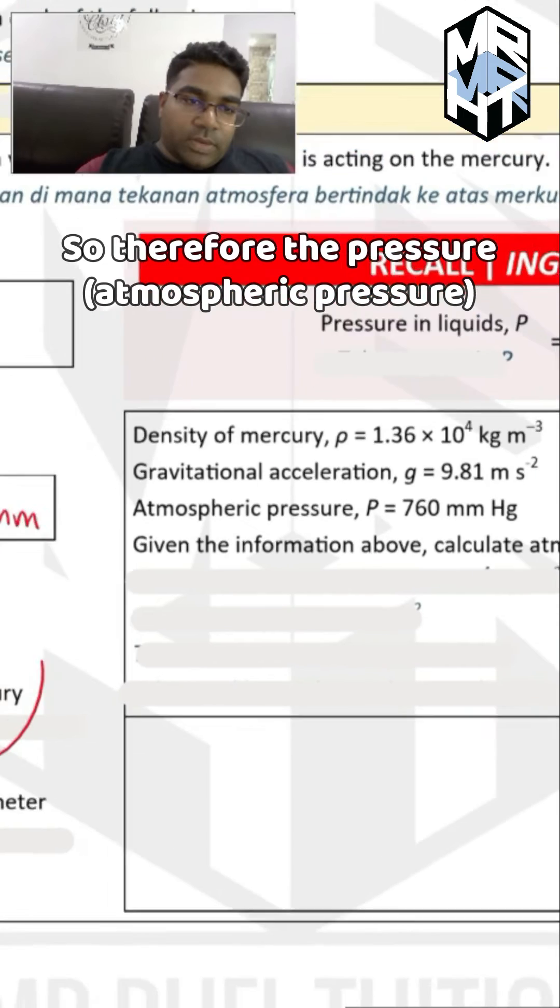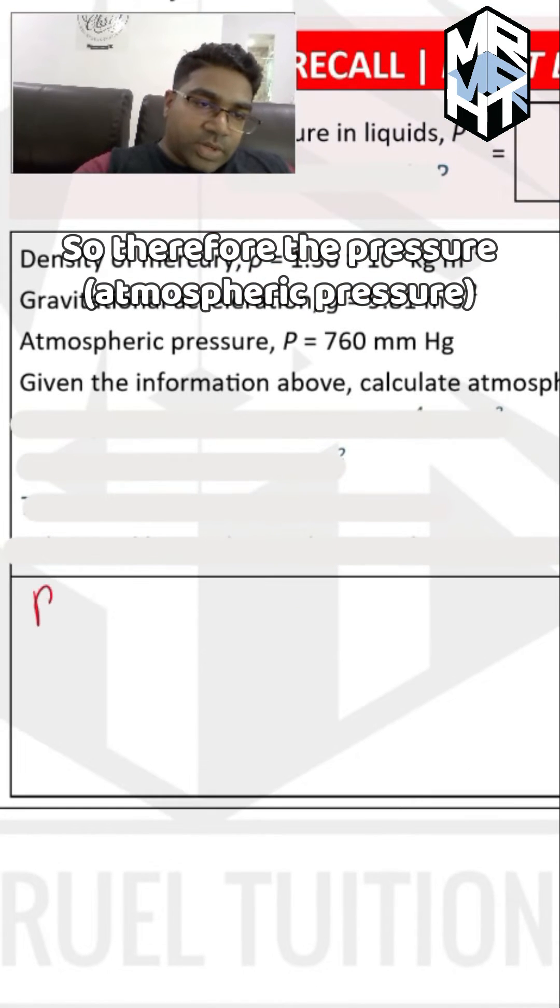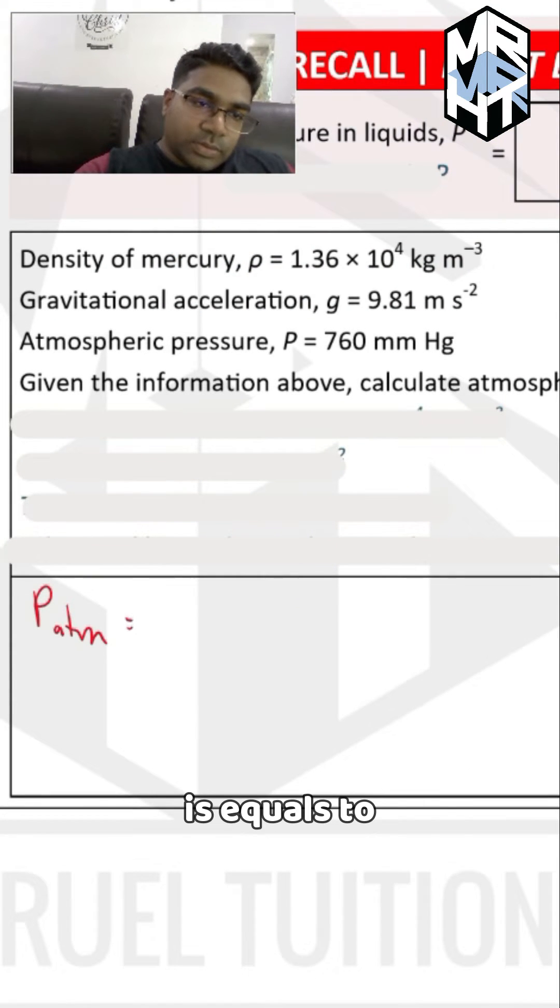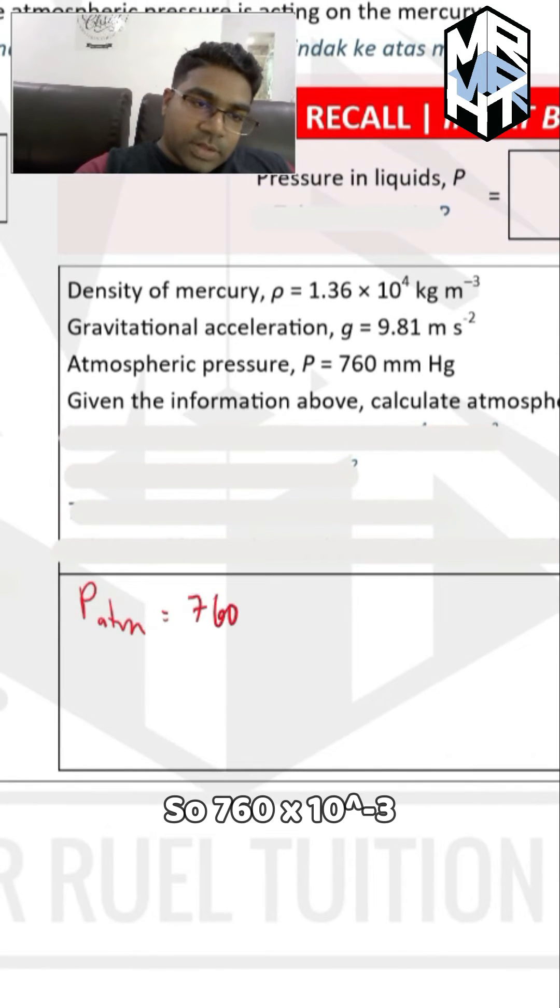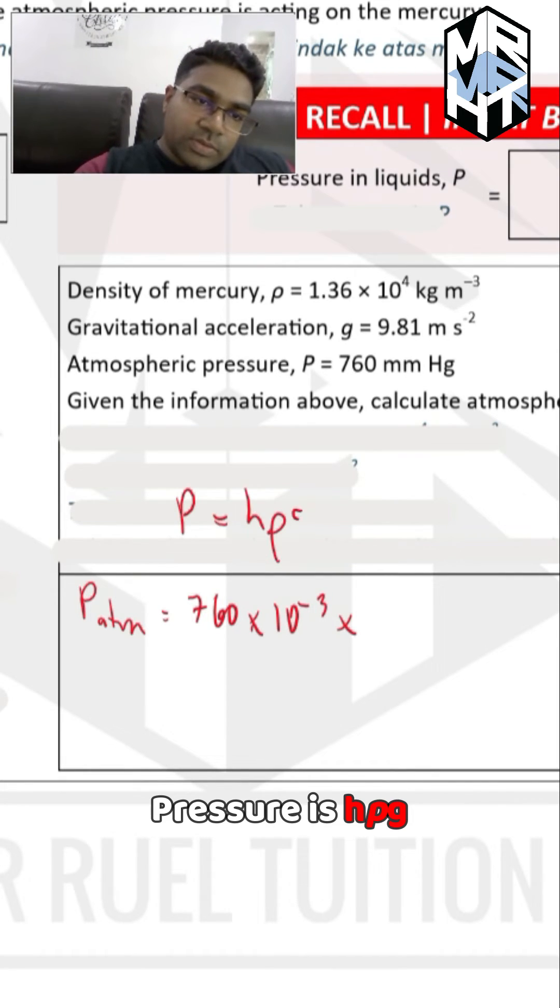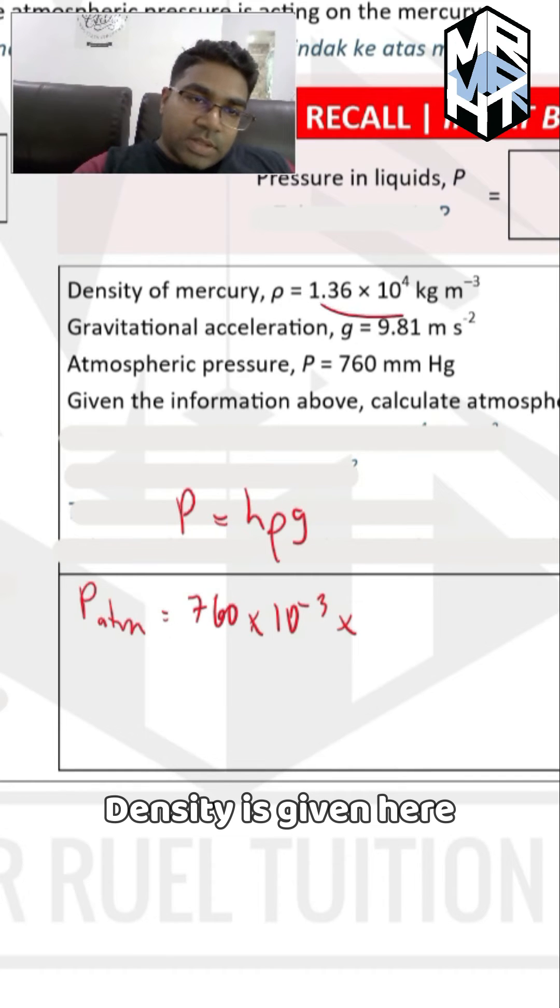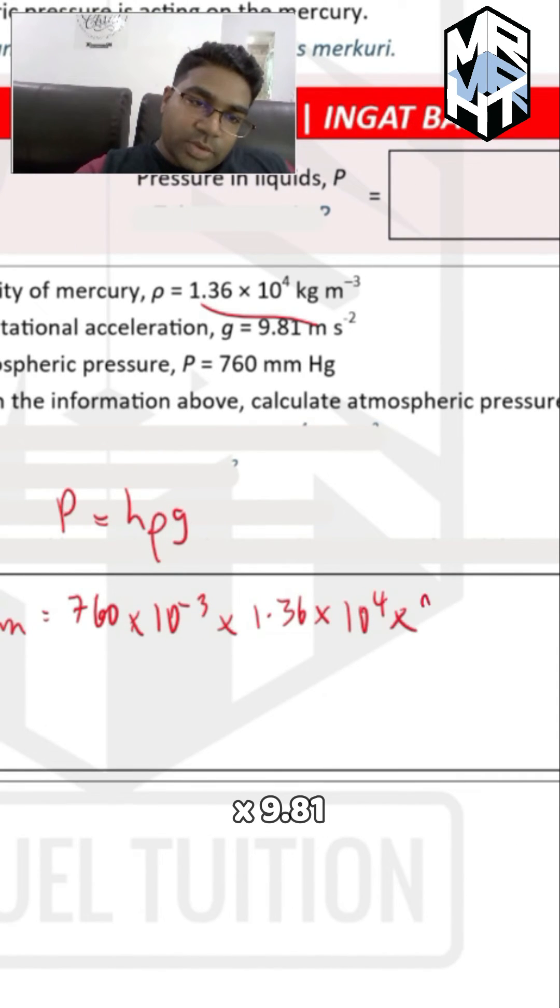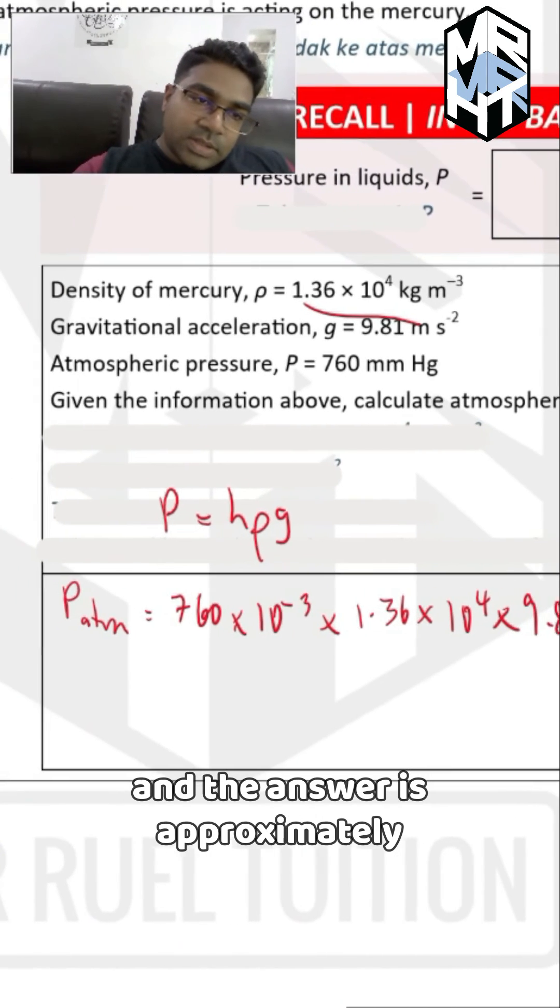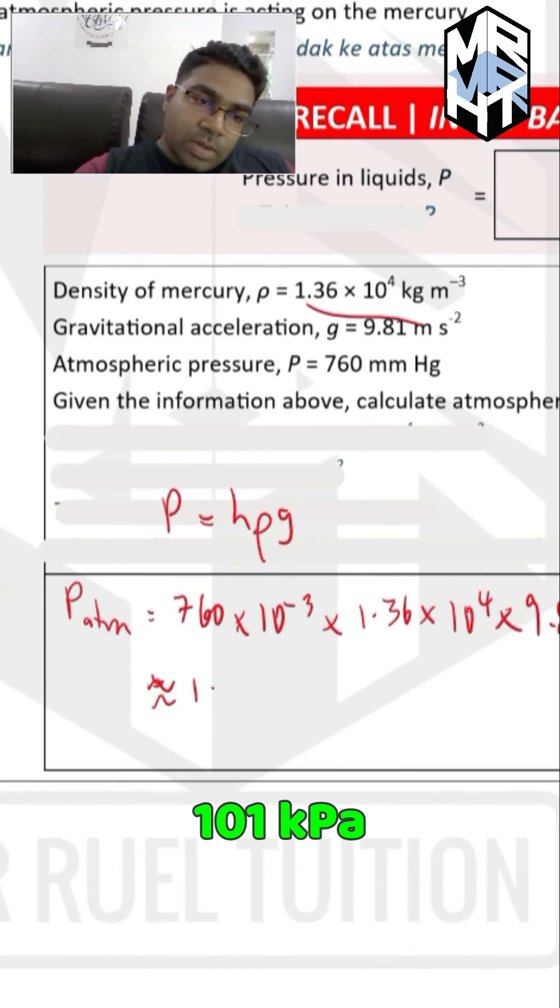So therefore the atmospheric pressure is equals to the height of mercury is 760 mm, so 760 times 10 to the power of negative 3 to change to meter, h rho, pressure is h rho g. Density is here given here 1.36 times 10 to the power of 4 and g times 9.81 and the answer is approximately 101 kilopascals.